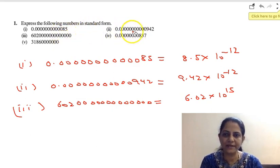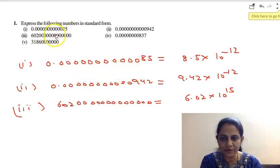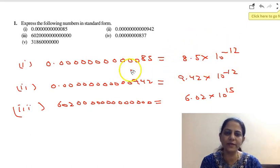Express the following numbers in standard form. So what is standard form? Standard form is the way of writing big numbers and small numbers easily. See, this is a number. If I read it like this, it is not easy to read. But if I write it in standard form, it is very easy to read.